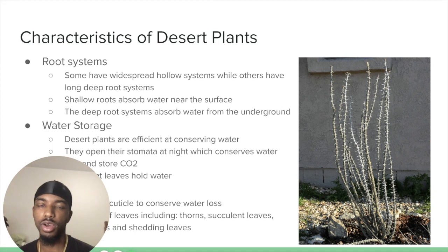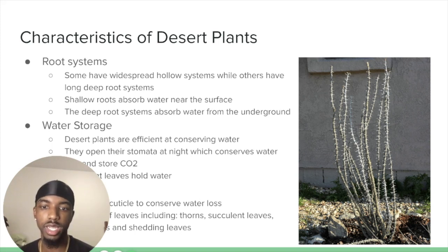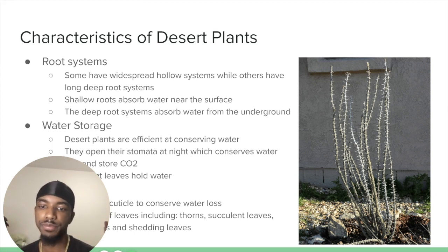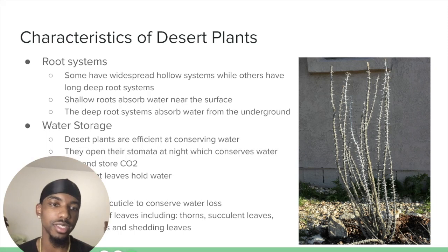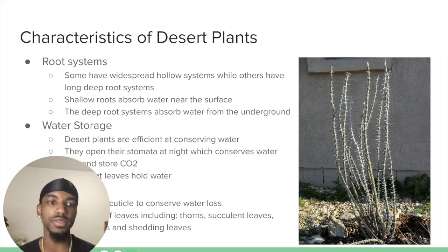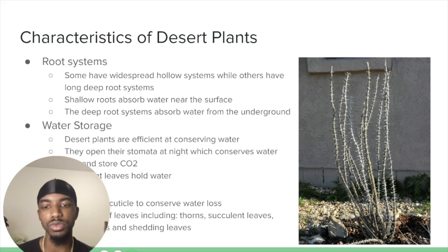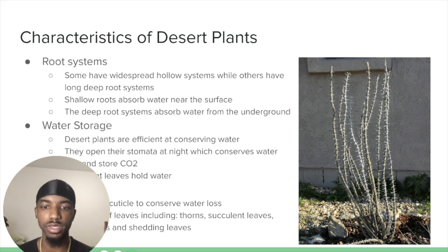Desert plants open their stomata at night, which conserves water and also stores carbon dioxide for photosynthesis during the day. Some of these plants also have succulent leaves, which are modified leaves that allow them to store water within the leaves.